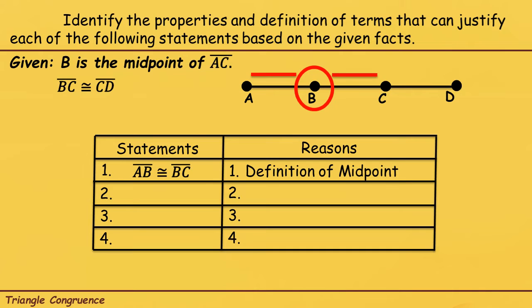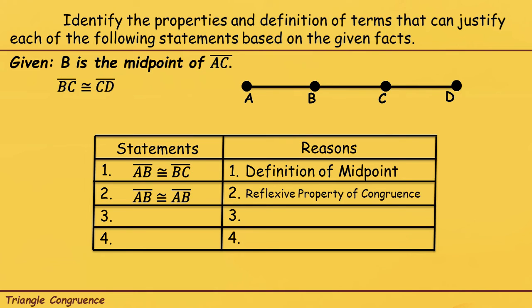Statement number 2: line segment AB is congruent to line segment AB. Dito sa statement number two, parang ito ay nabanggit sa properties of congruence. That is the reflexive property of congruence.